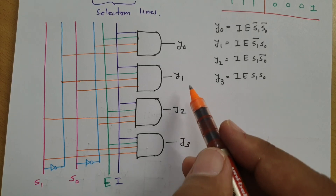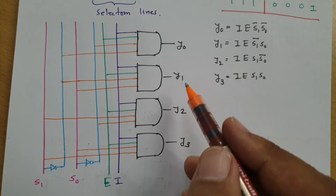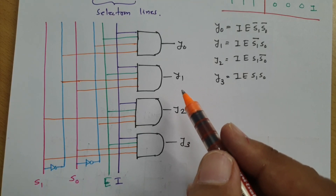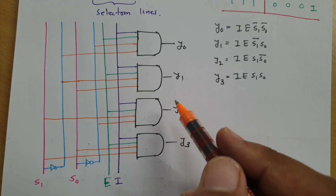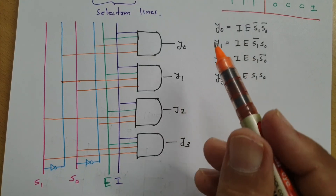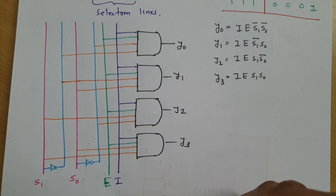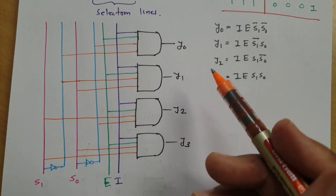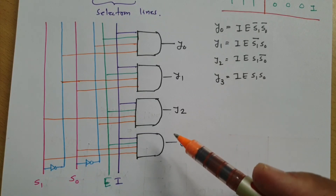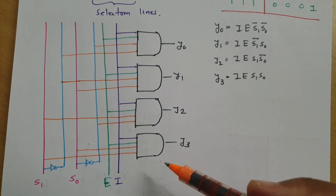This 1-to-4 demultiplexer performs serial-to-parallel conversion with four parallel output lines, and the output is selected depending on the selection lines. I hope you have understood this video. Please give your valuable suggestions, as they are highly required and will guide future videos.